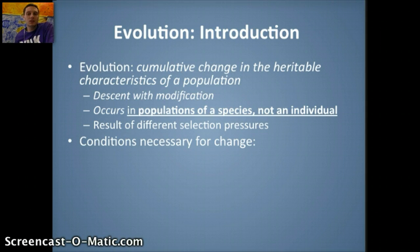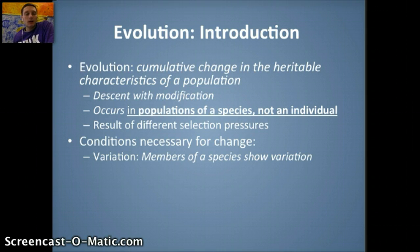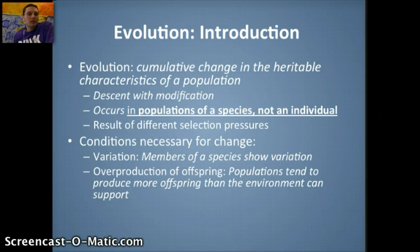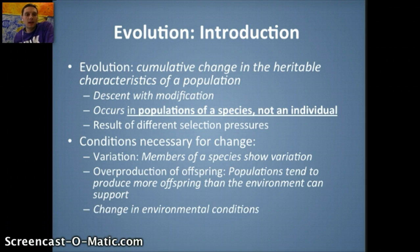Evolution is a result of different selection pressures in the environment. There are some conditions necessary for change: the first being variation — members of a species show variation. There's an overproduction of offspring, meaning populations tend to produce more offspring than the environment can support. And there's a change in environmental conditions that causes those selection pressures to change.